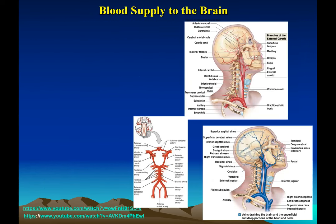The brain is a very needy organ — it needs a lot of oxygen, using about 20% of your glucose and oxygen supply. Of course, it has a rich blood supply coming through the carotid arteries, which divide into internal and external carotid arteries, and vertebral arteries. All these arteries come up and form a circular network at the base of the brain called the circle of Willis, then branch out to nourish every cell in the brain, leaving as the jugular vein.